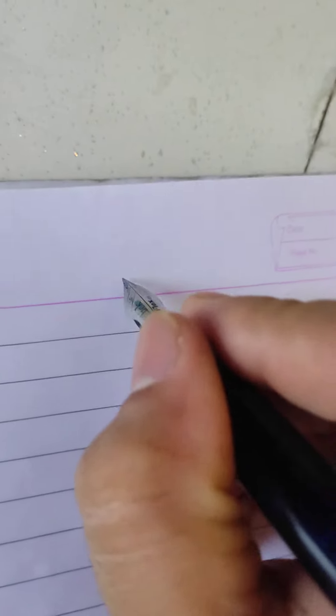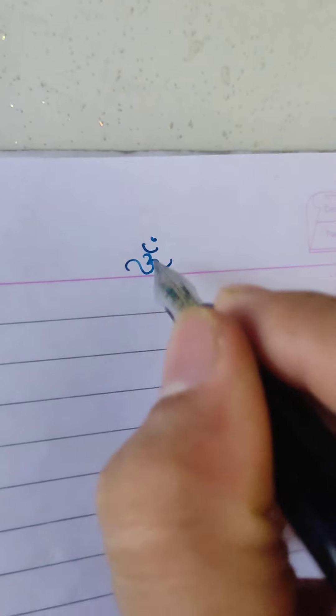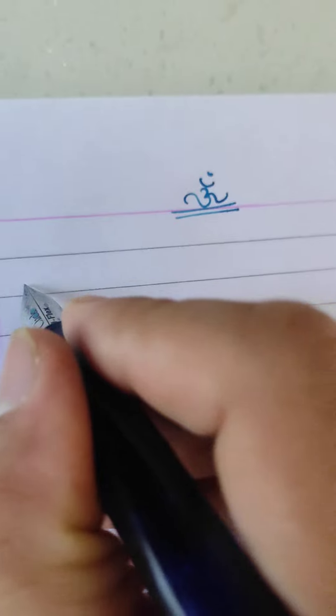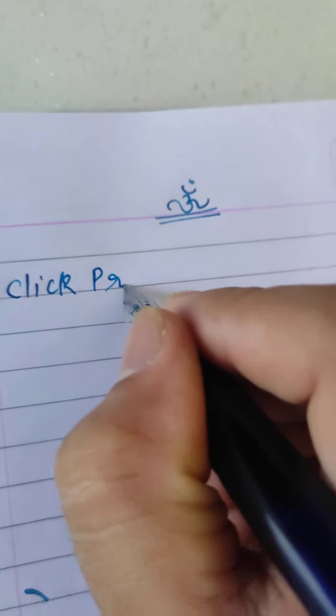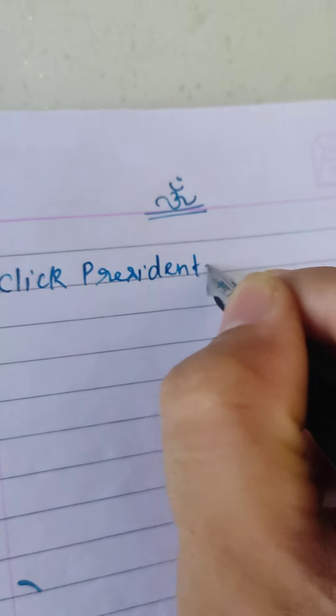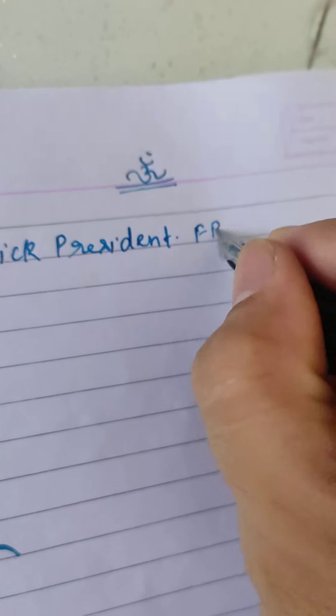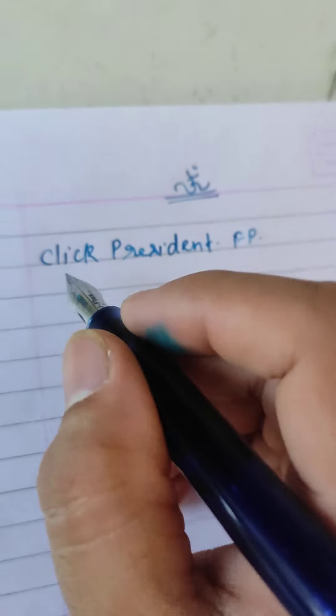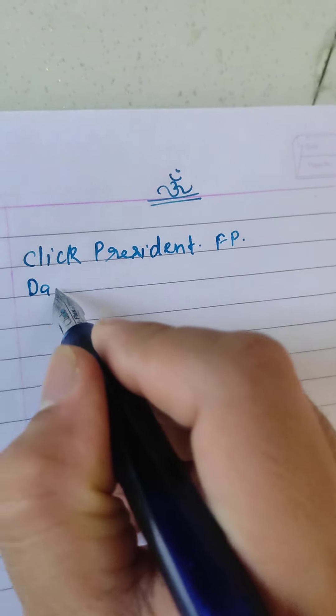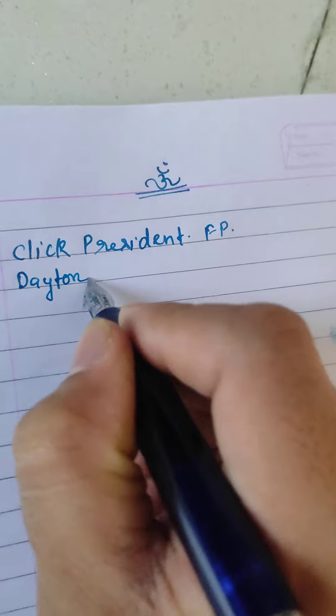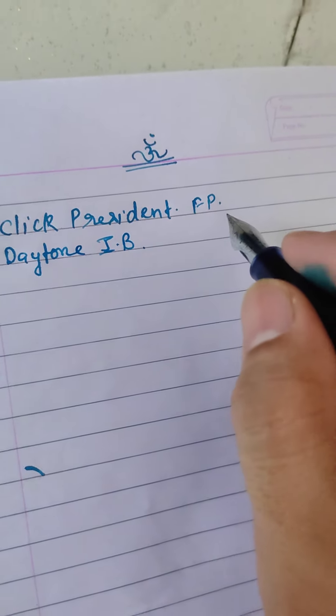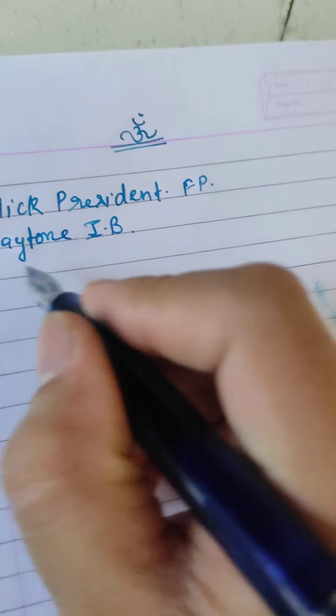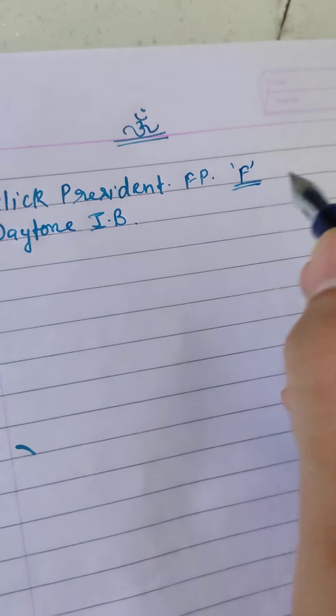So as this is a new pen, I will start again with it. This is Click President fountain pen. The ink is gray tone turquoise blue and this is fine nib steel.